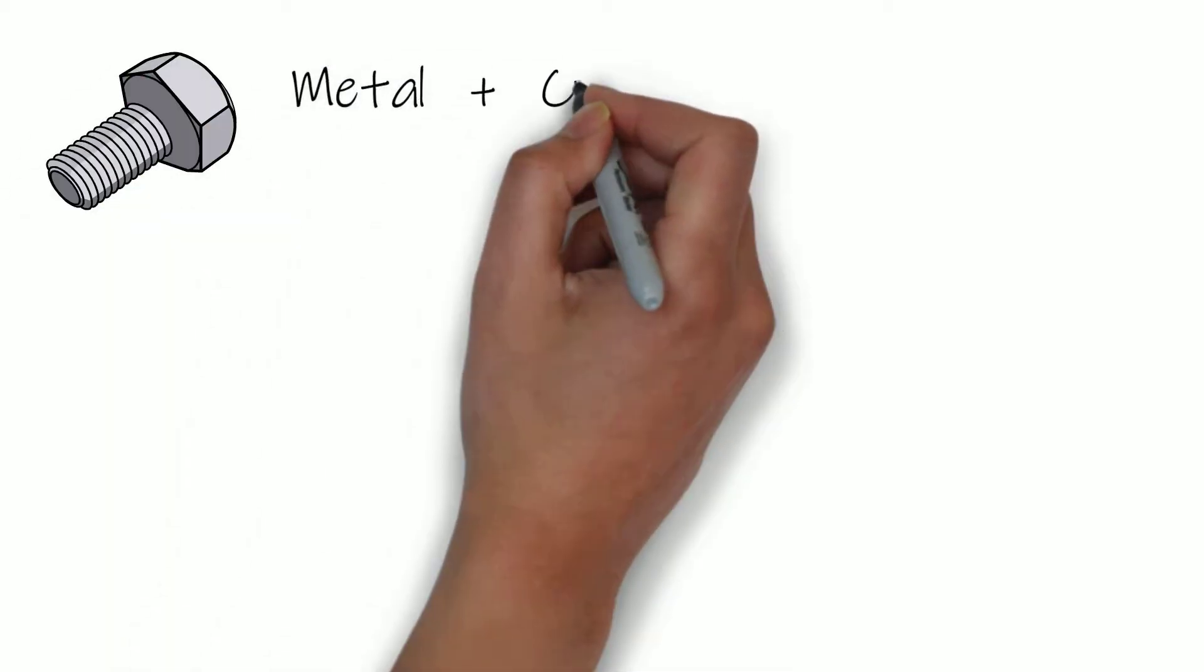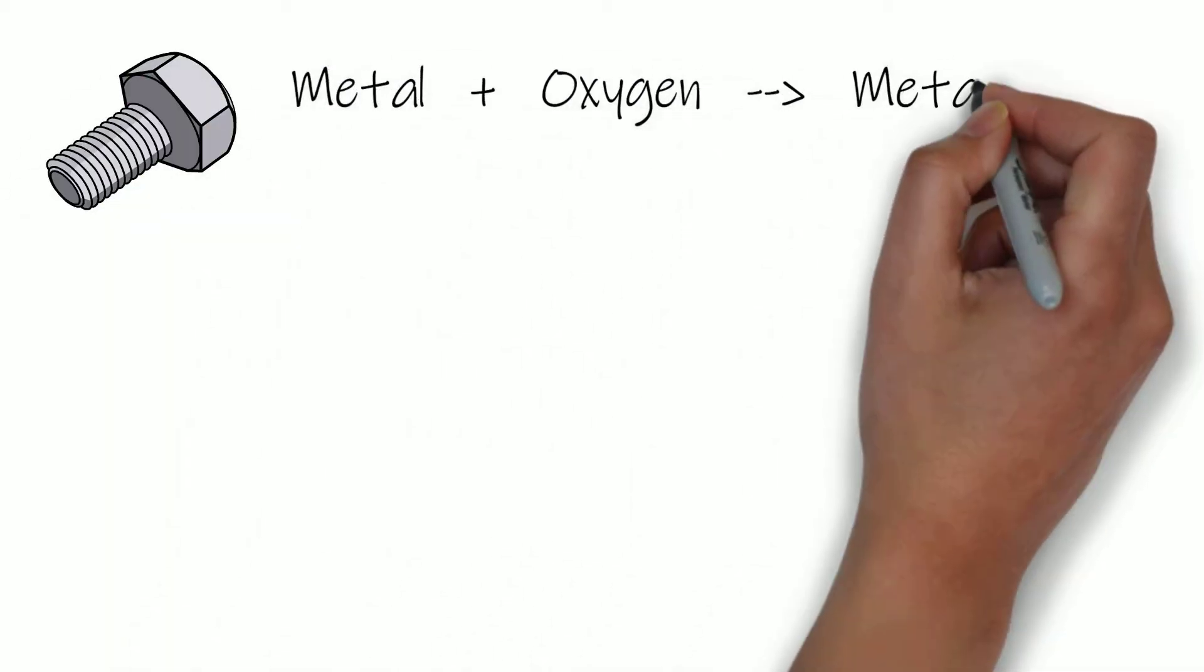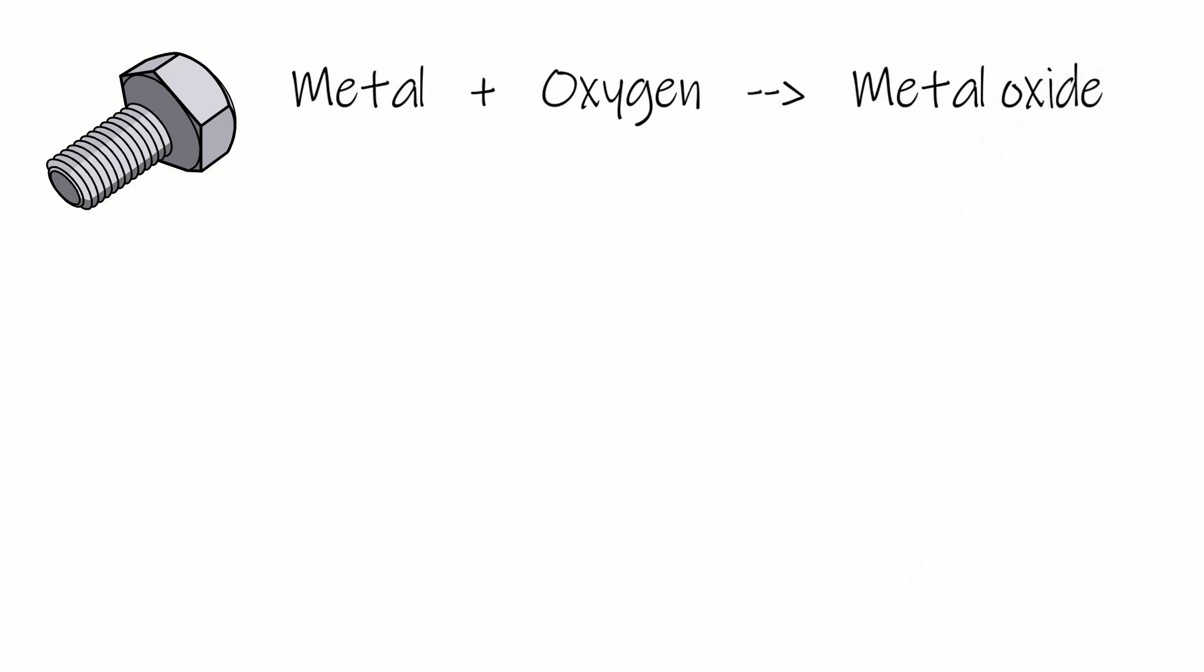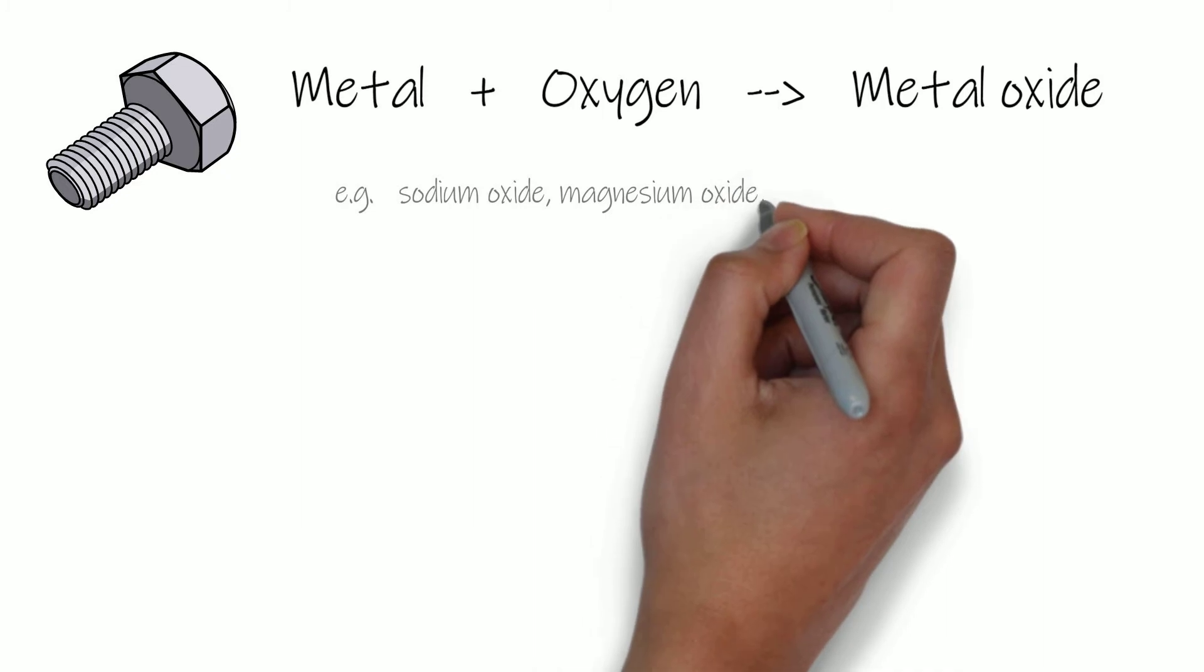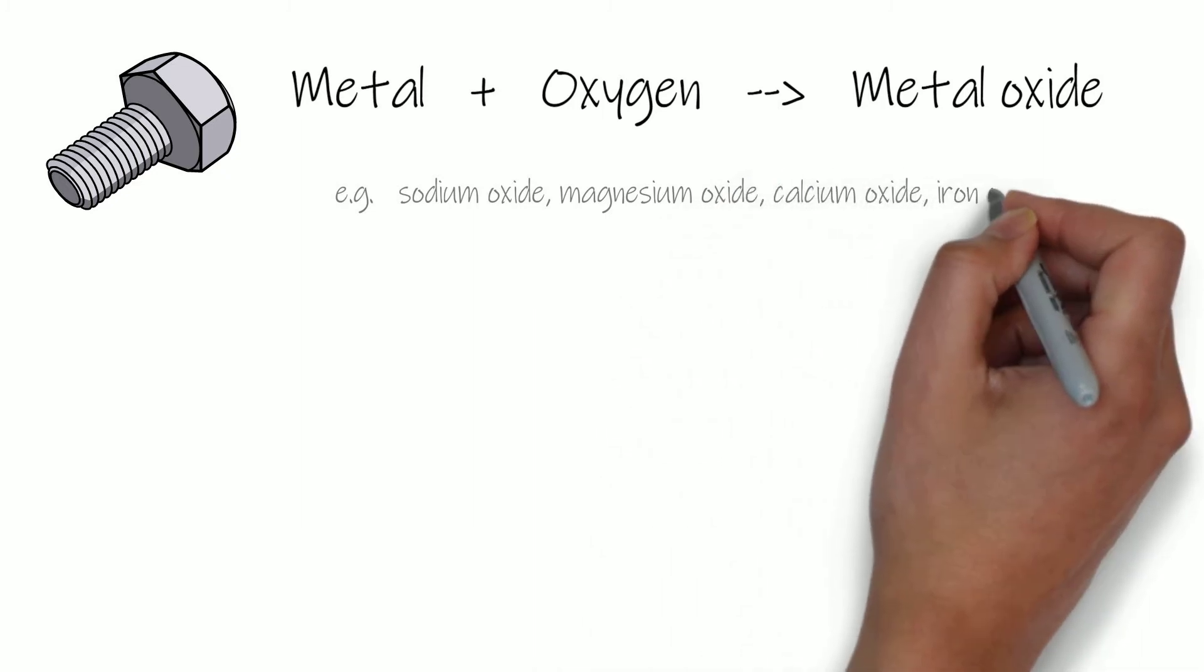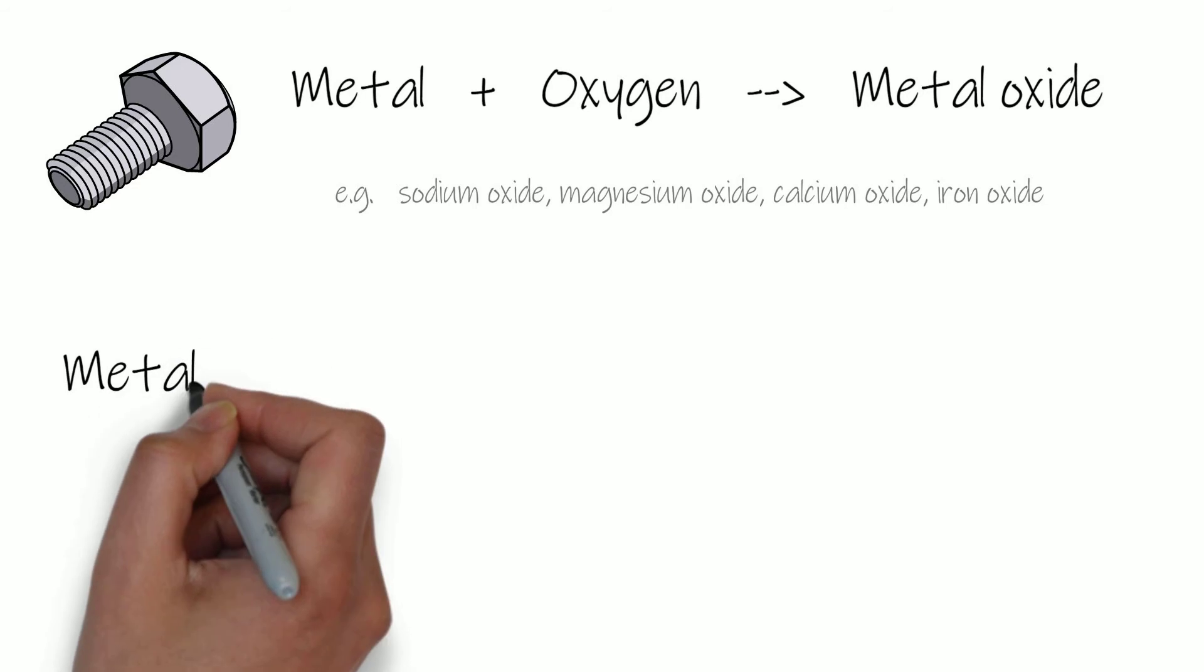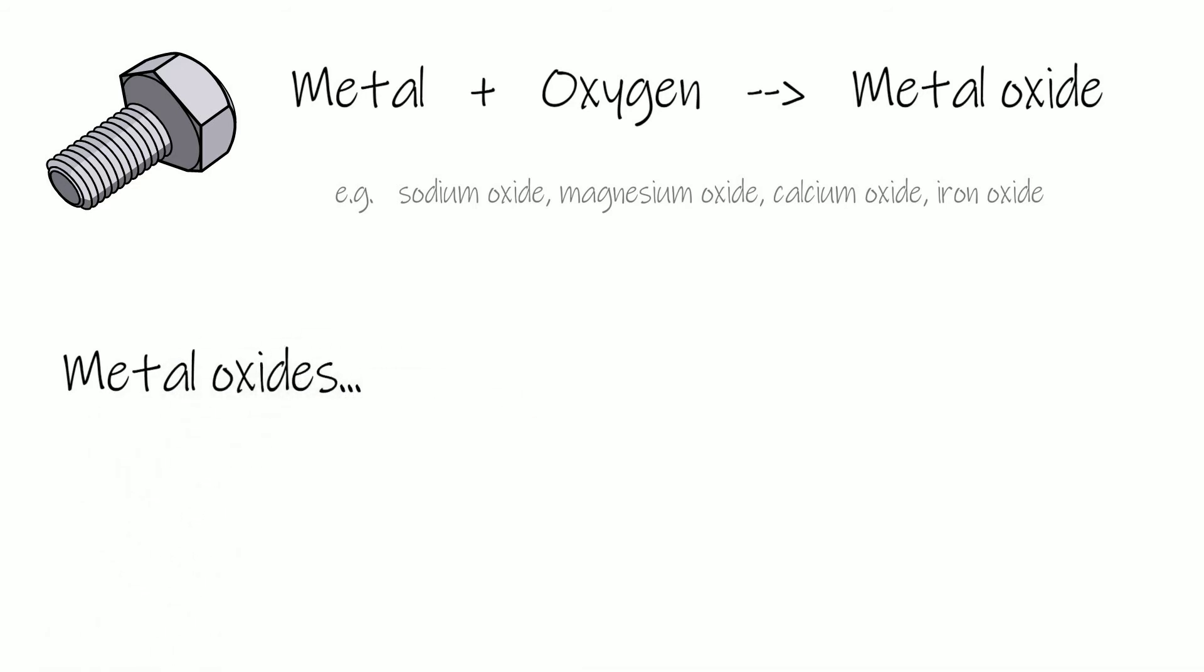Okay, so let's remind yourself first what a non-metal oxide or a metal oxide is and how it's formed. So a metal oxide is formed when a metal reacts with oxygen, for example in the air, and that produces a metal oxide such as sodium oxide, magnesium oxide, calcium oxide, iron oxide, you could also have beryllium oxide, things like that.